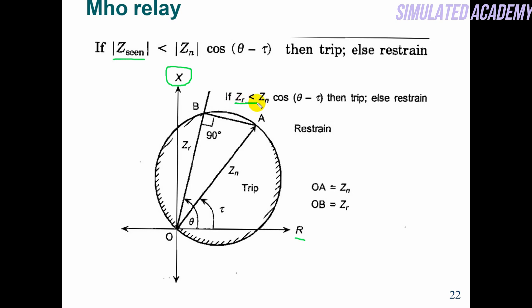The condition is Z_in < Z_in × cos(θ − τ) for tripping; otherwise it restrains. OA is Z_in × cos(θ), which is a preset value, and Z_r is the apparent value that the relay measures at some instance. τ is the maximum torque angle and θ is the angle between voltage and current. Z_in is the diameter of the circle. Compared to simple impedance relay where Z_in was the radius, in this case the circle is much smaller.